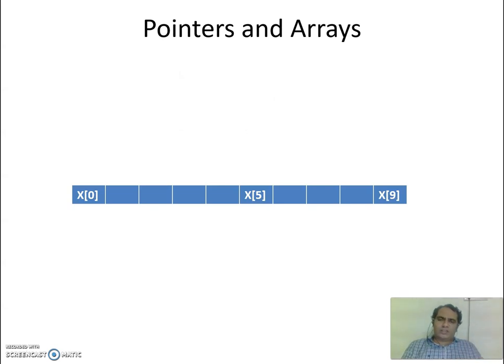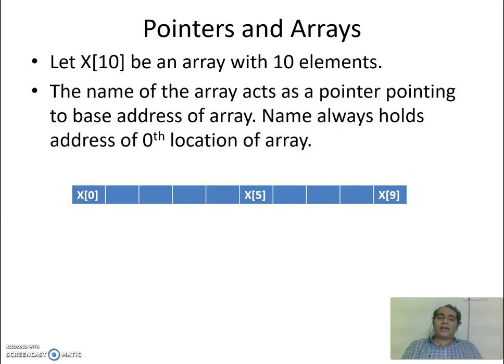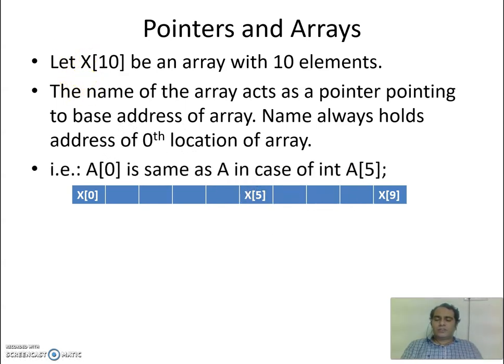Let us try to understand the concept of pointers and arrays. Take this example: let X[10] be an array with 10 elements. The name of the array acts as a pointer pointing to base address of array. Every time, remember, this X will act as a pointer. A[5], A acts as a pointer. Name always holds address of 0th location of array. So this 0th location has got some address. That address will be held by X every time. That is, A[0] is same as A in case of int A[5], because A and A[0] hold the same address.